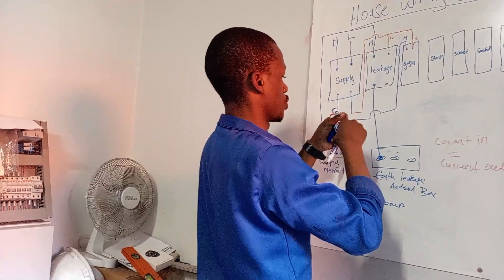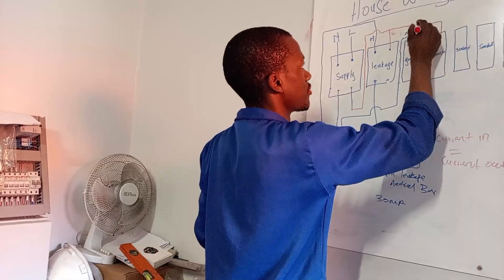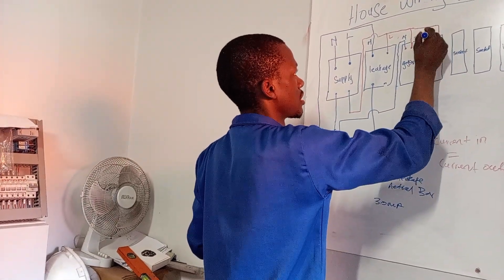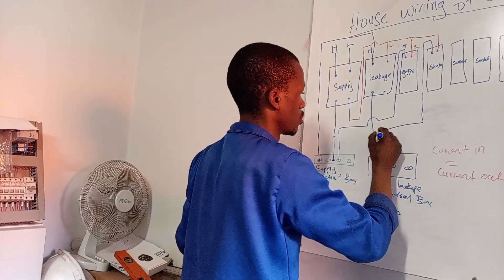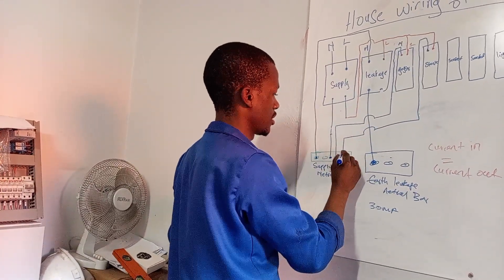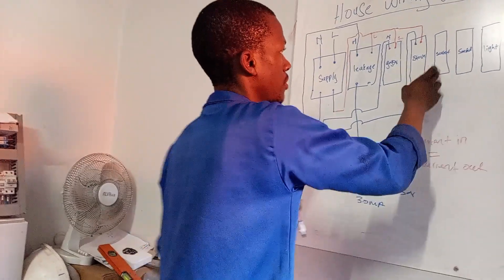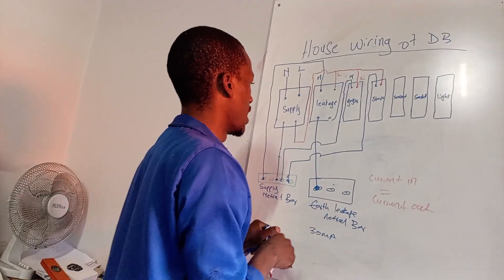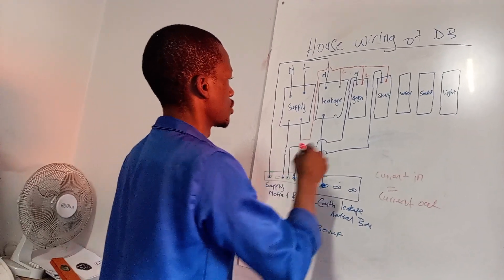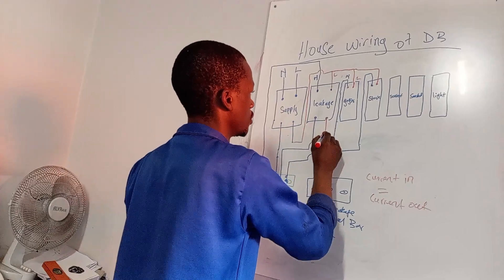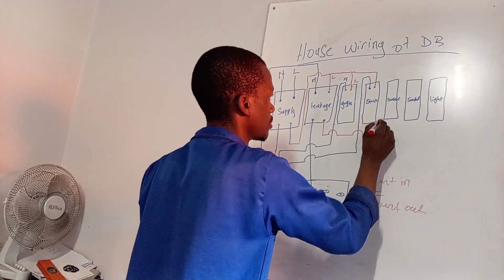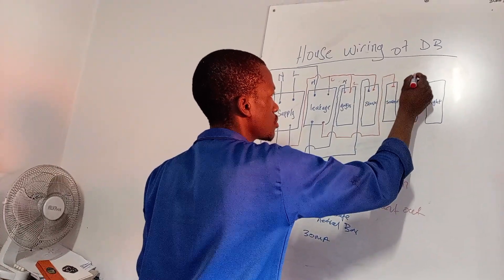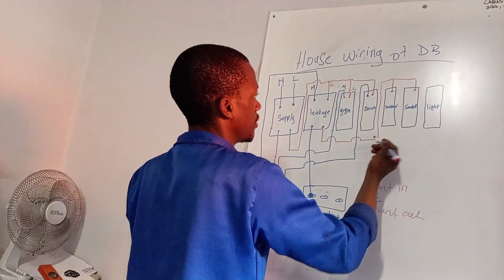For the stove also, let's take our live from there and our neutral will also jump and come here on the supply side. For the circuits, we are going to put them under our earth leakage. Your live will come here and then your neutral also.